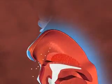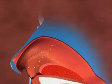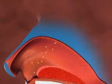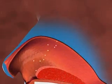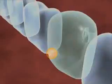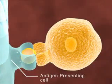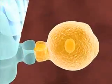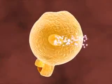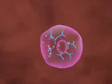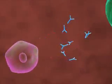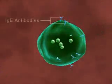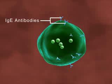On first exposure, the inhaled allergen enters the mucous membrane lining the nasal passages, where it is taken up by the antigen-presenting cell, which presents it to the T-cells. These T-cells activate the B-cells to release substances called IgE antibodies against the allergen.